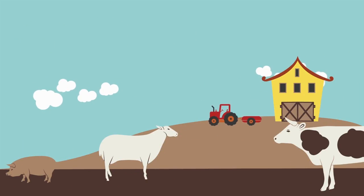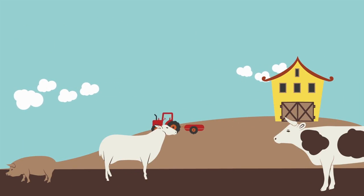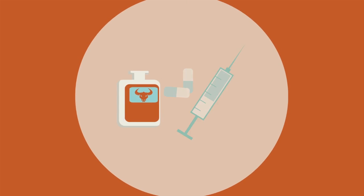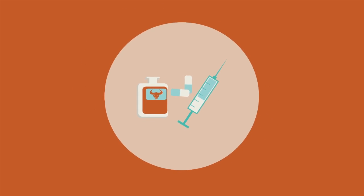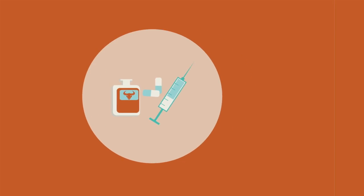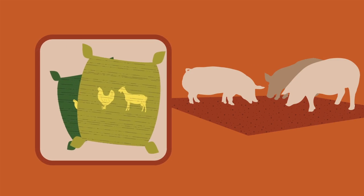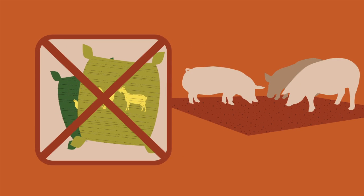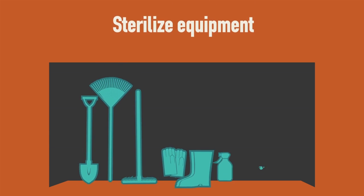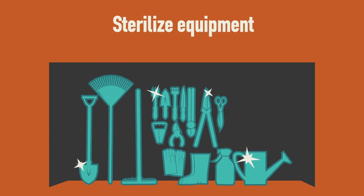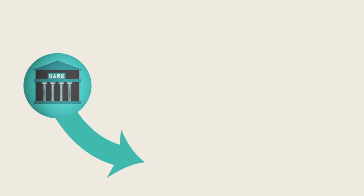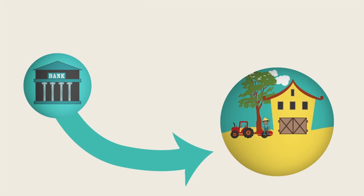For raising animals, GAPs include minimizing the use of non-therapeutic antibiotics or hormones, not feeding livestock animal by-products, and ensuring farms adequately sterilize equipment to prevent the spread of disease.